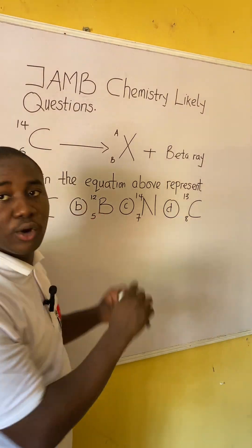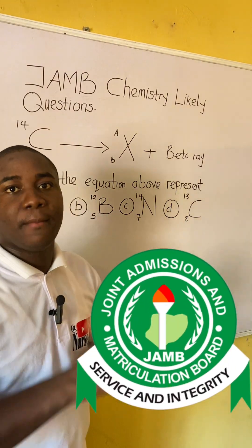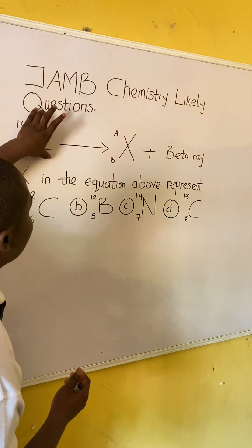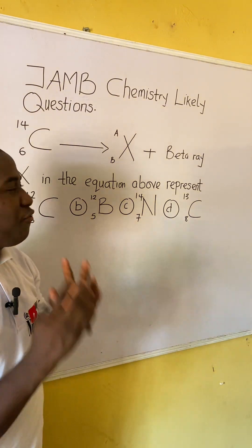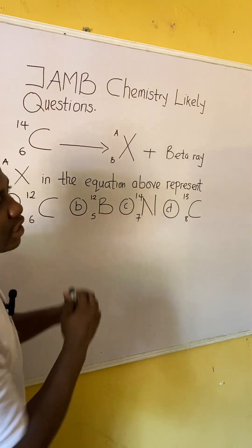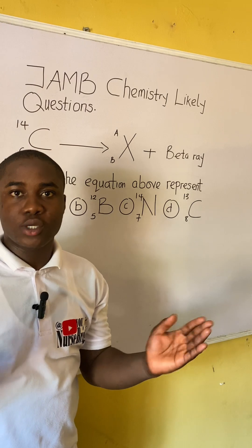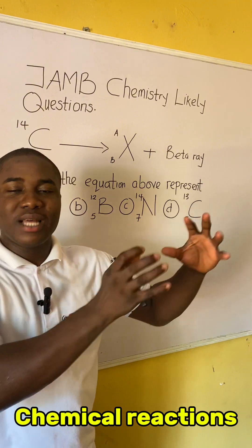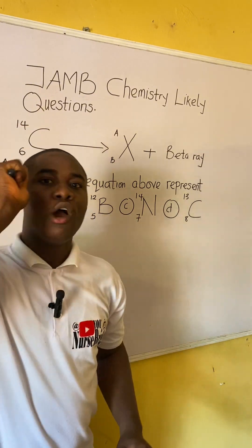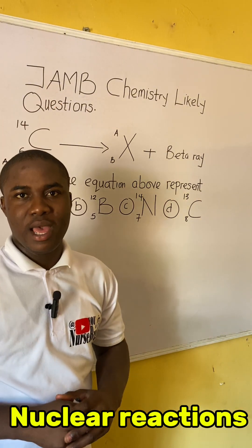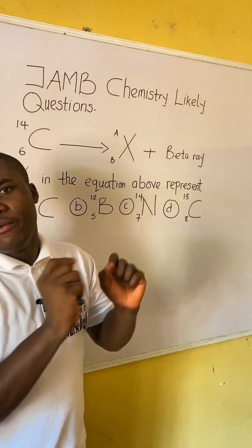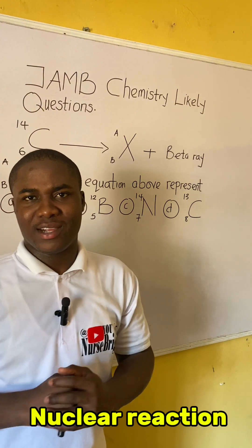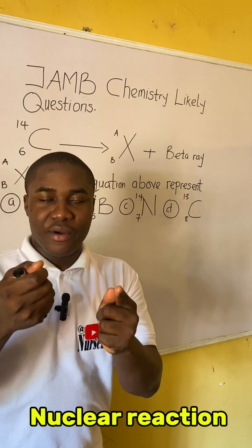If you came across this question in your JAMB exam, here is how you will solve it — it is very easy. Let's solve together. You can see we are given a reaction. Now first of all, we have to know what type of reaction this is, because we have different types of reactions in chemistry. The reaction on the board — is it a chemical reaction or a nuclear reaction? It is actually a nuclear reaction.